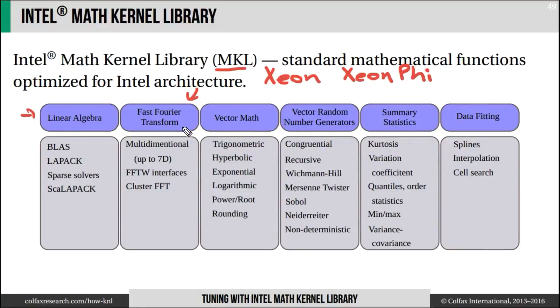Fast Fourier transform is available for one-dimensional and multi-dimensional transforms as well as cluster implementations. There are other modules of MKL that you might find useful such as random number generators. Some of them can be used in multi-threaded contexts.